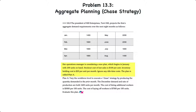The operations manager is considering a new plan which begins in January with 200 units on hand. Stockout cost of lost sales is $100 per unit. Inventory holding cost is $20 per unit per month, and we're supposed to ignore any idle time costs. Plan A will vary the workforce to execute a chase strategy by producing the quantity demanded in the prior month — meaning next month's production equals this month's sales. December demand and rate of production were both 1,600 units per month. The cost of hiring additional workers is $5,000 per 100 units and the cost of laying off workers is $7,500 per 100 units. Our objective is to evaluate the plan.